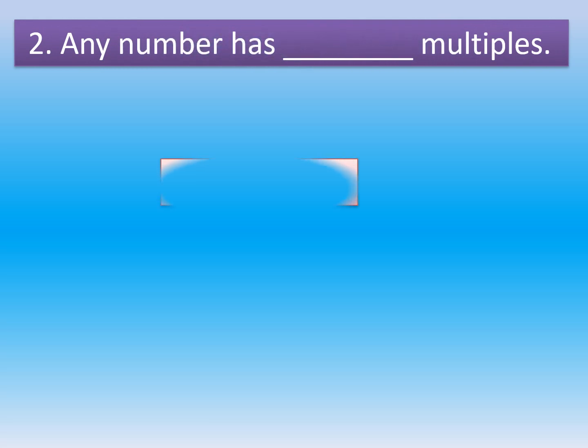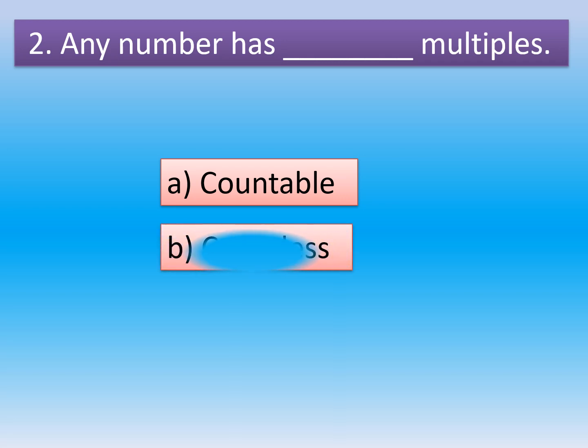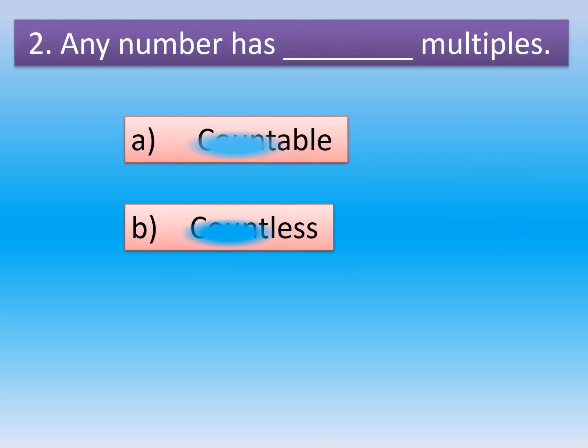Question number 2: Any number has dashed multiples. Option A, Countable. Option B, Countless. The correct option is Option B, Countless.